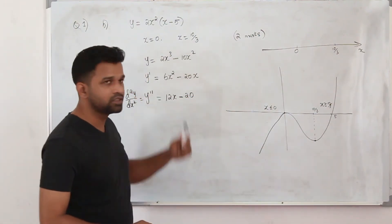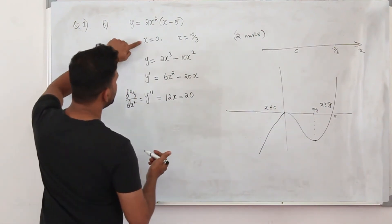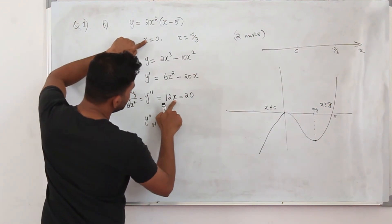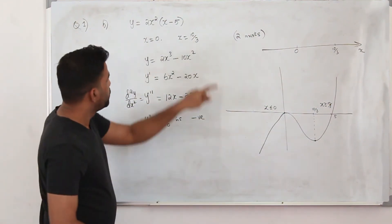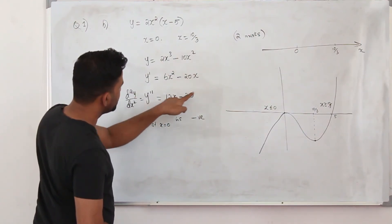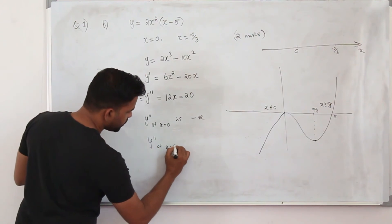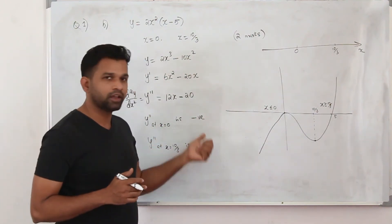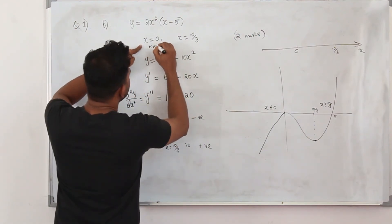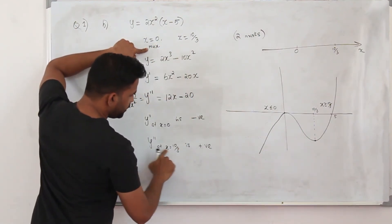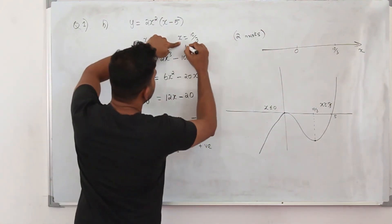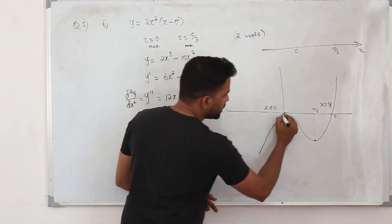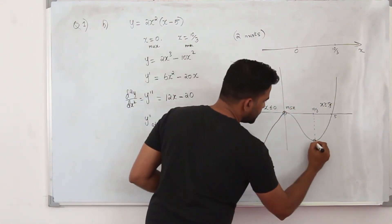Using the second derivative on the stationary points: when you substitute x equals 0, y'' is negative — so x equals 0 is a maximum point. When you substitute x equals 10/3, y'' equals 12 times 10/3 minus 20, which equals 40 minus 20, giving a positive value — so x equals 10/3 is a minimum point. If the second derivative is negative the point is a maximum; if positive it is a minimum.